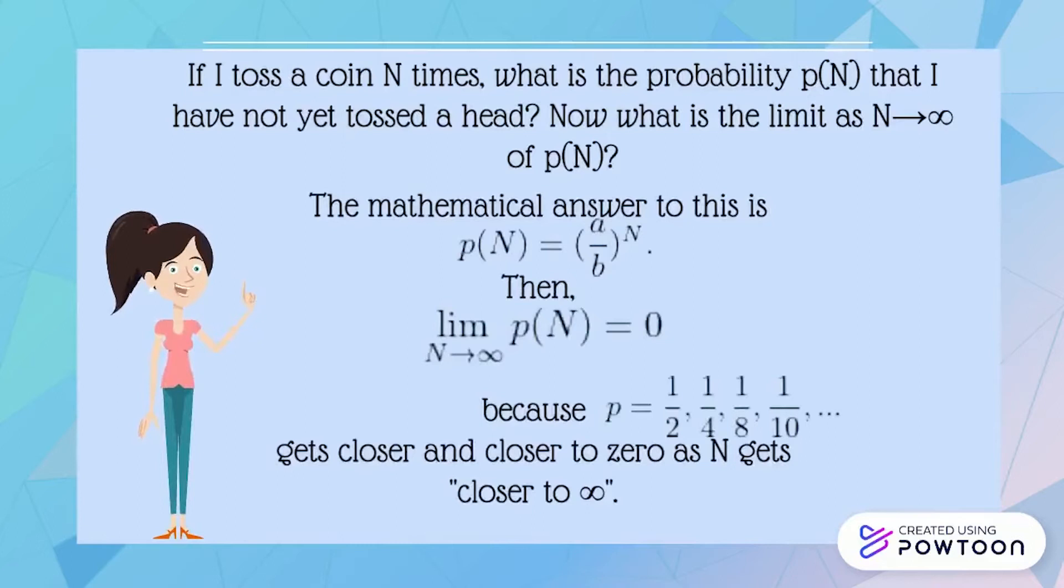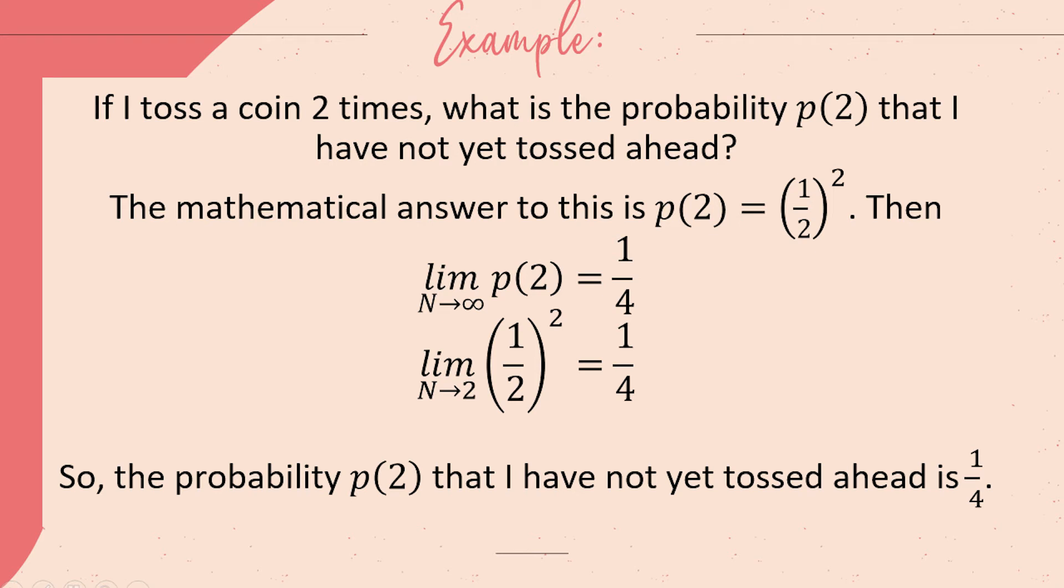Okay, now I want to give you all one practice about that pattern. If I toss a coin two times, what is the probability p(2) that I have not yet tossed a head? To answer that question we can replace N by 2 and it can be p(2) equals 1/2 to the power of 2. Then the limit of p(2) for N approaches infinity equals a quarter. So the probability p(2) that I have not yet tossed a head is a quarter.